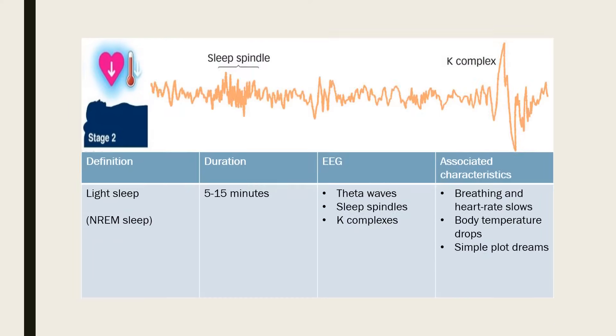Stage 2 is the main body of sleep and lasts 5 to 15 minutes. It is a light sleep during which memory consolidation occurs. Eye movement stops and brainwaves become slower with occasional bursts of rapid brainwaves known as sleep spindles and K complexes also appear. Heart rate slows and body temperature decreases in preparation for deep sleep.